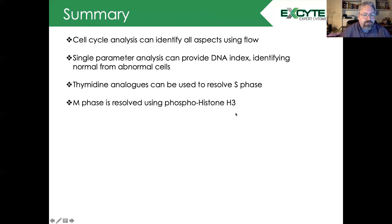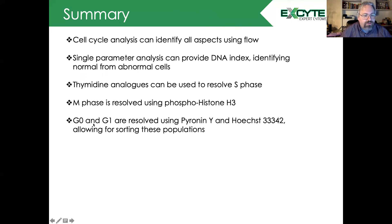The M phase can be resolved using phospho-histone H3, allowing us to resolve M phase and S phase, which leaves us with the G1 and G0 phase. The G1 and G0 phases are resolved using Pyronin Y and Hoechst 33342. Pyronin Y preferentially binds to DNA and RNA while Hoechst will out-compete Pyronin Y for the DNA binding, allowing us to look at RNA content and identify G0 or G1.